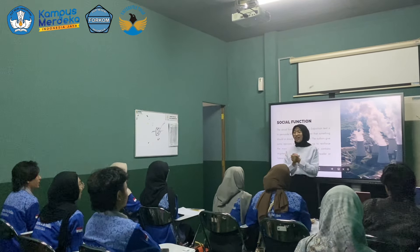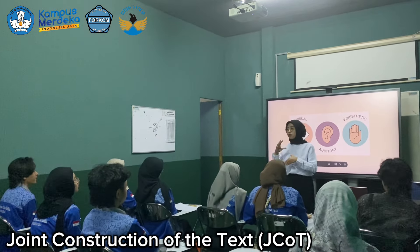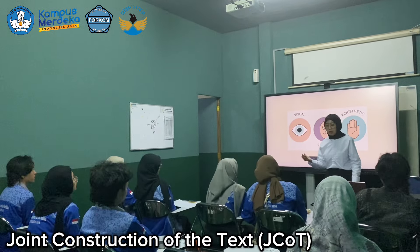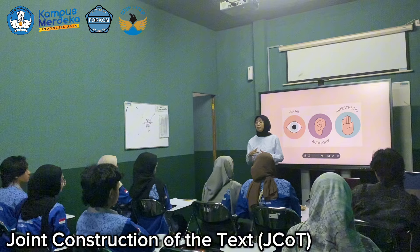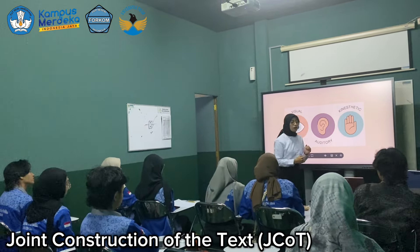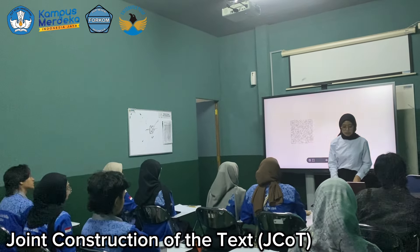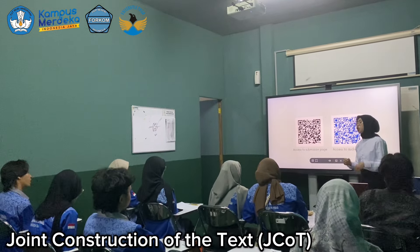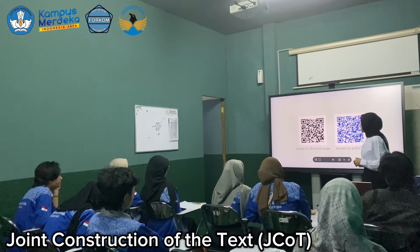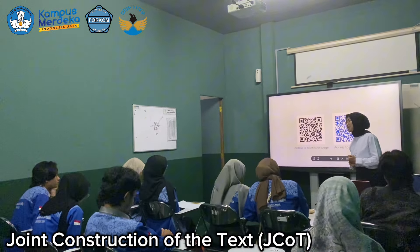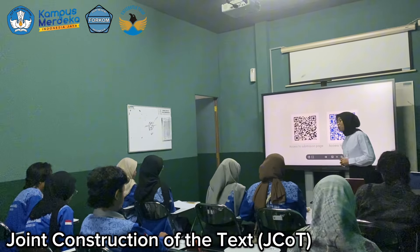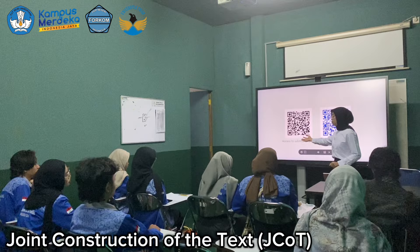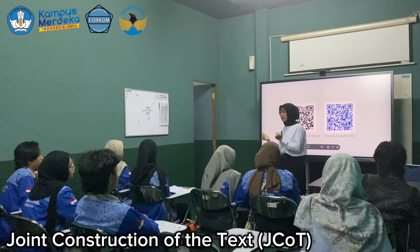So are you ready for group work? Okay. I want you to sit with your group based on the previous test we did last week — about what your learning style is, whether you're visual, auditory, or kinesthetic. Let me explain the instructions for today's group activity. For the auditory group, you will access two barcodes — the blue one to access the audio file. You will listen to the material, analyze it, and check the main idea, social function, and language features of the text.